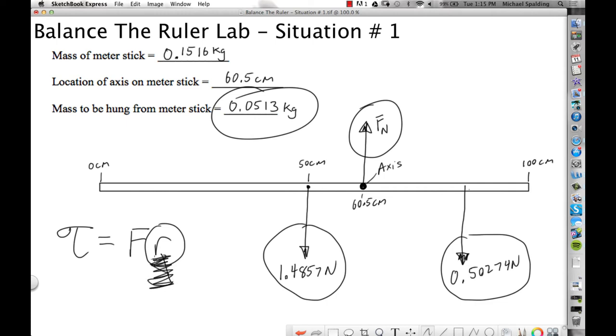The definition for R, it's the distance from axis to force. So looking at the normal force, how far is the normal force from the axis? Zero. That goes to zero for the normal force. So there is no torque.